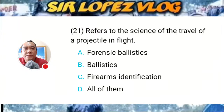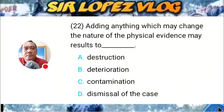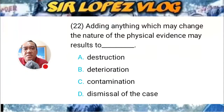Question number twenty-two: Adding anything which may change the nature of the physical evidence may result to: A) distraction, B) deterioration, C) contamination, or D) dismissal of the case?